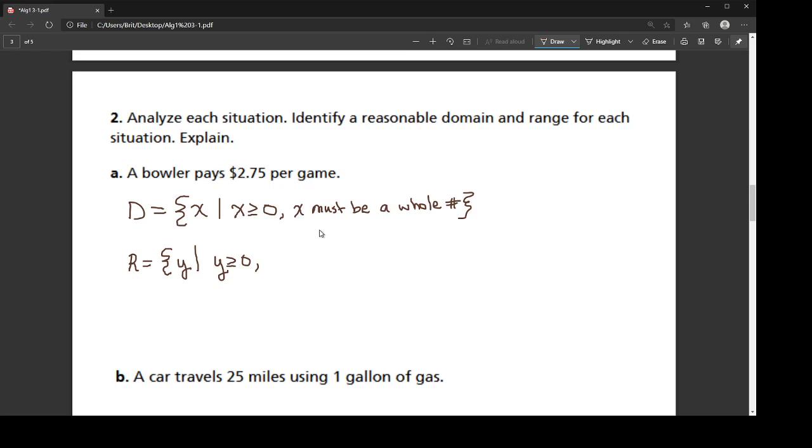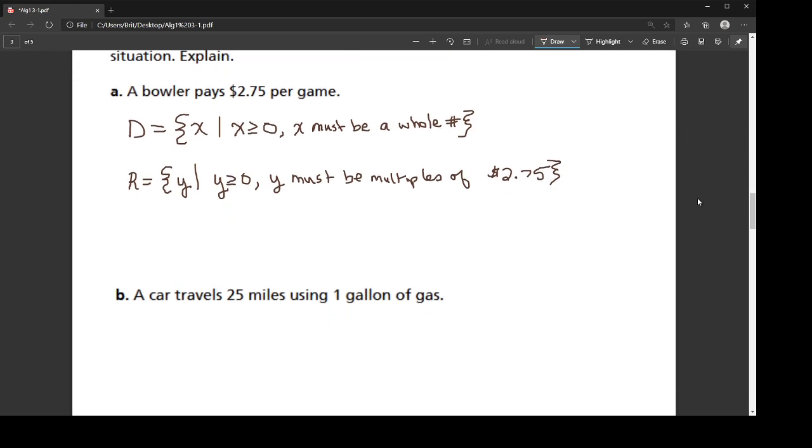But also, because he can't play a portion of a game, he has to pay in multiples of 275. And that's, again, because he's not able to play a portion of a game, he can't pay for a portion of a game.